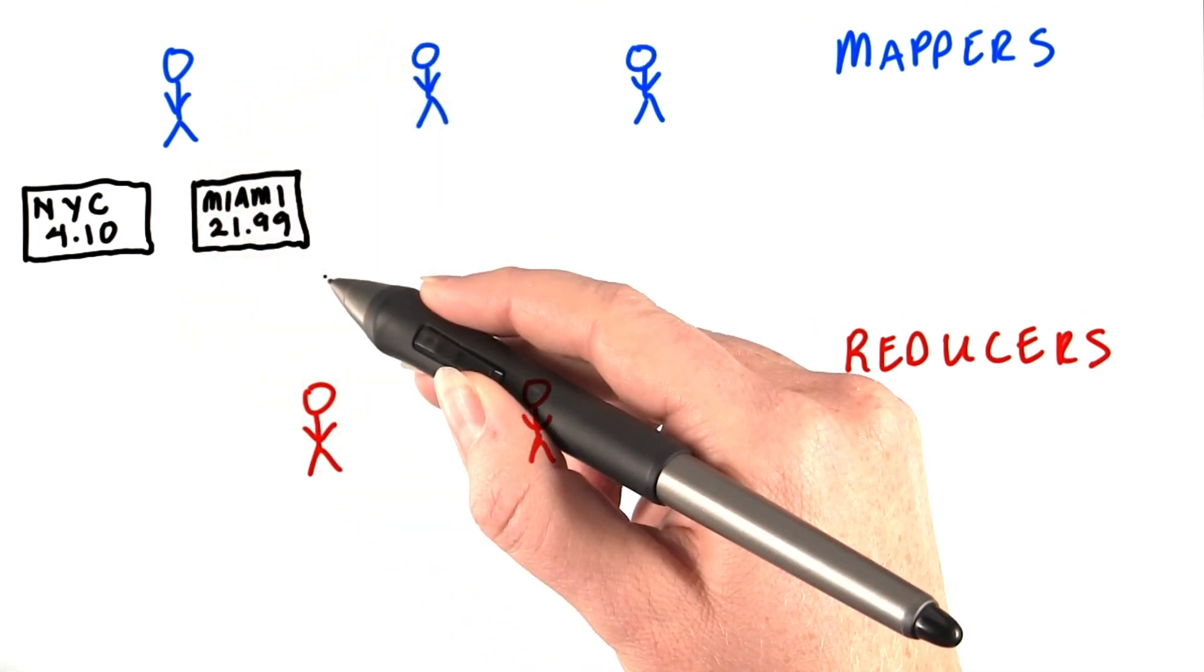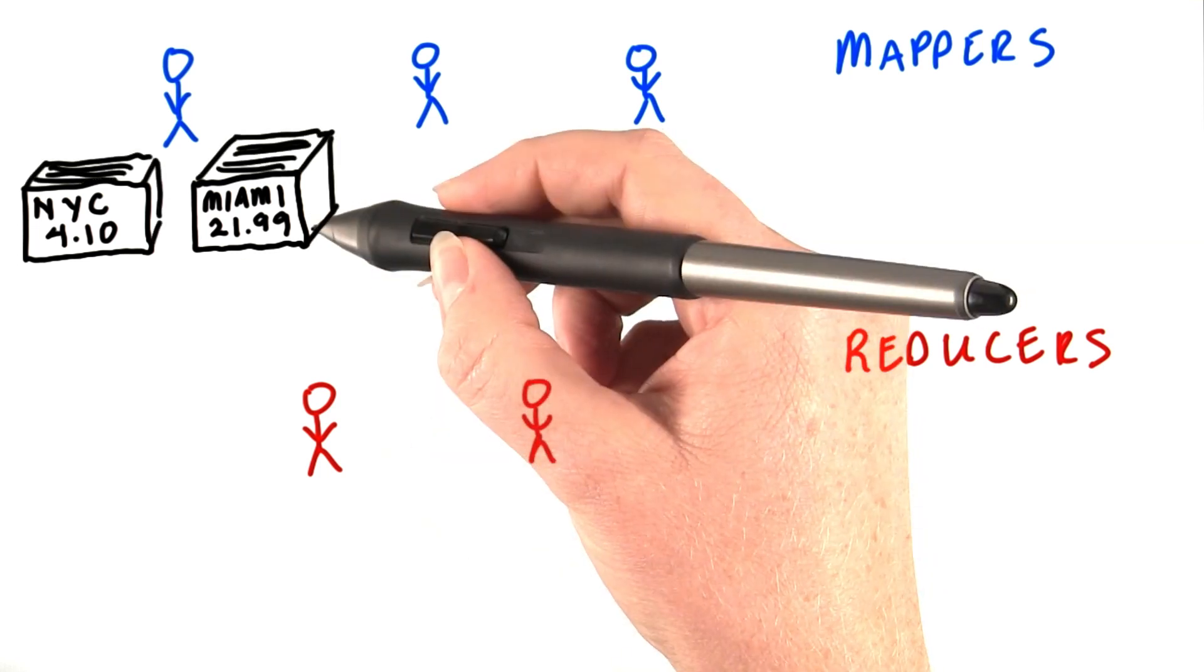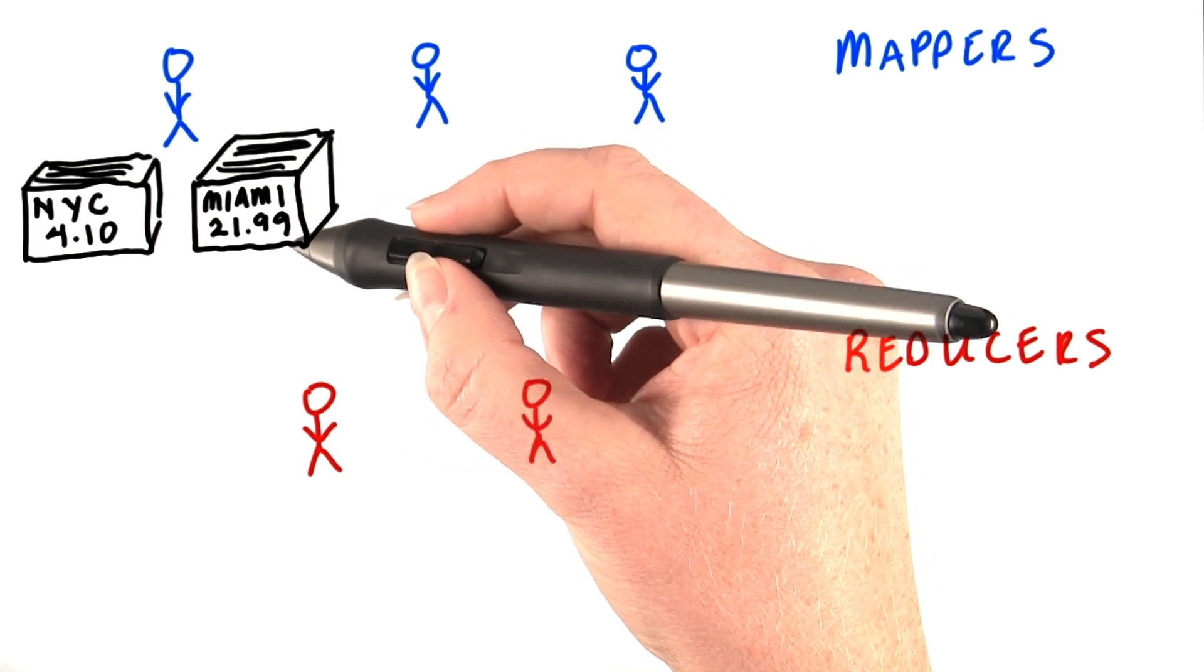As they're writing the index cards, they'll pile them up so that cards for the same store go in the same pile. By the end, each mapper will have a pile of cards per store.